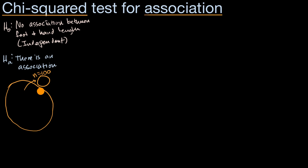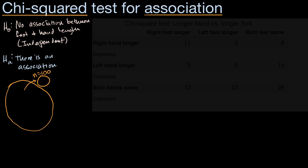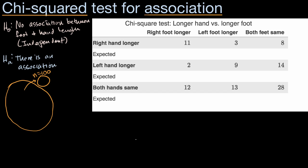For all 100 folks, we figure out whether their right hand is longer, their left hand is longer, or both hands are the same — and we also do that for the feet. We tabulate all of the data, and this is the data that we actually get. Now it's worth thinking about how what we just did is different from a chi-squared test for homogeneity.